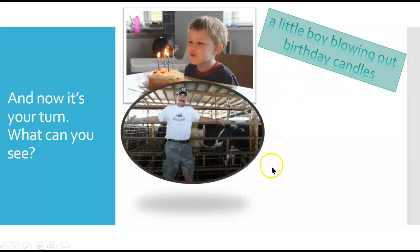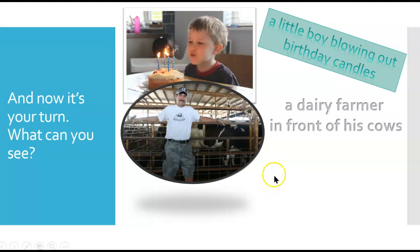What can you see? Five, four, try by yourself. Three, two, one. A dairy farmer in front of his cows. We've got an article, we've got a compound noun, dairy farmer. In, in front of, prepositional phrase. This is very common.